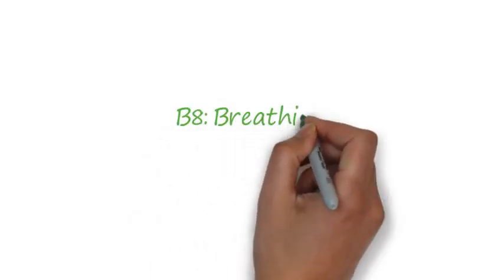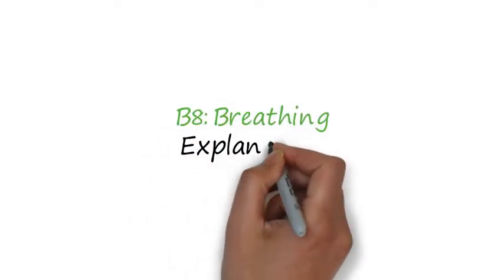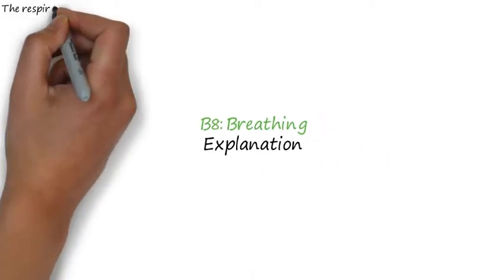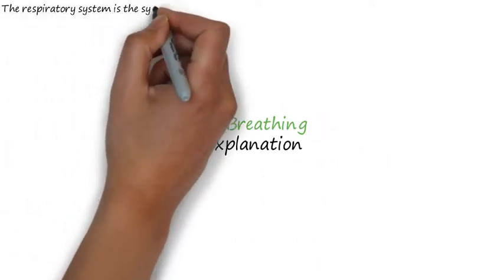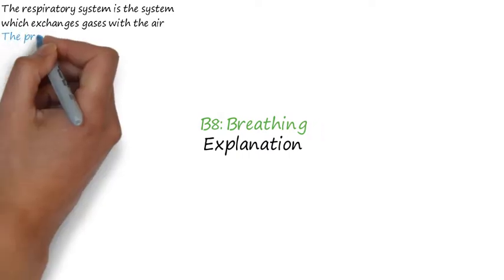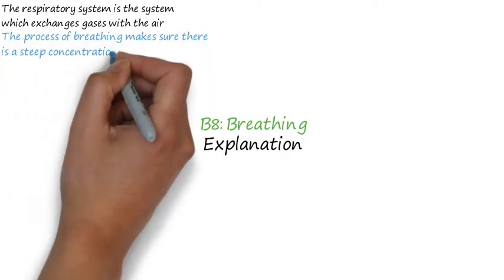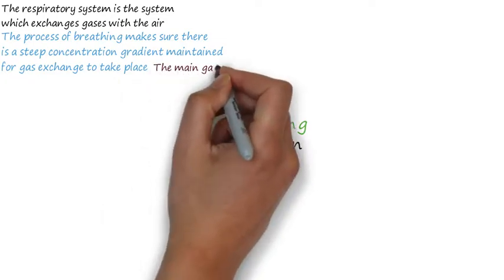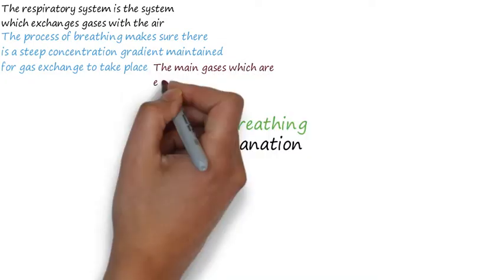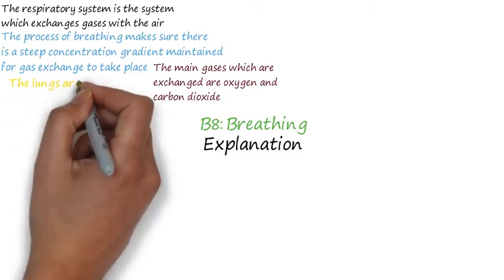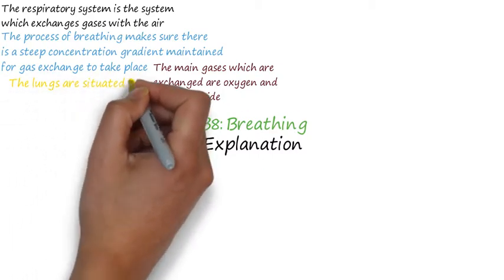Another organ system in the human body is the respiratory system. The respiratory system is the system which exchanges gas with the air. The process of breathing makes sure that there is a steep concentration gradient maintained for gas exchange to take place. The main gases which are exchanged are oxygen from the air into the blood, and carbon dioxide from the blood into the air.